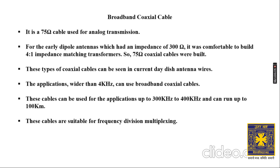You might have heard the term 'broadband' in internet connections — it is called broadband because it increases the bandwidth of your connection. It is also used for analog transmission like in telephones, and mainly for video transmission because of its high bandwidth. The 75-ohm value was chosen because of the comfortable 4:1 impedance matching, since early dipole antennas had an impedance of 300 ohm.